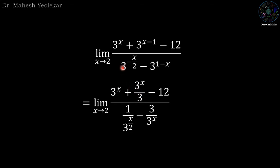In the denominator, 3^(-x/2) is written in the form of 1 over 3^(x/2), minus 3^(1-x) written in the form of 3 over 3^x.